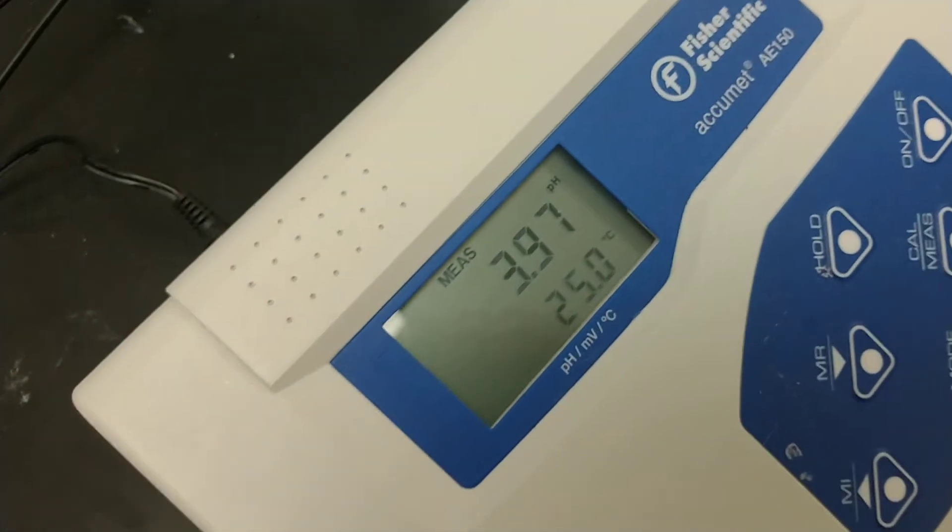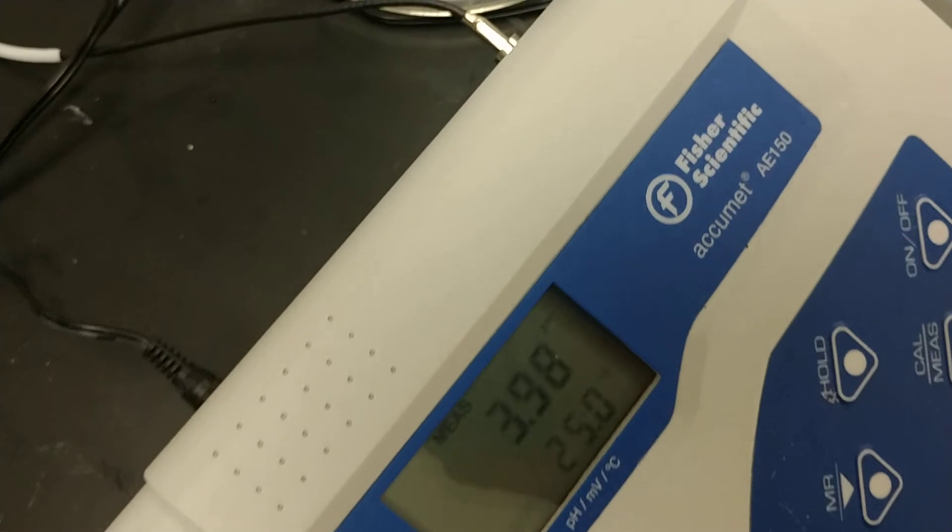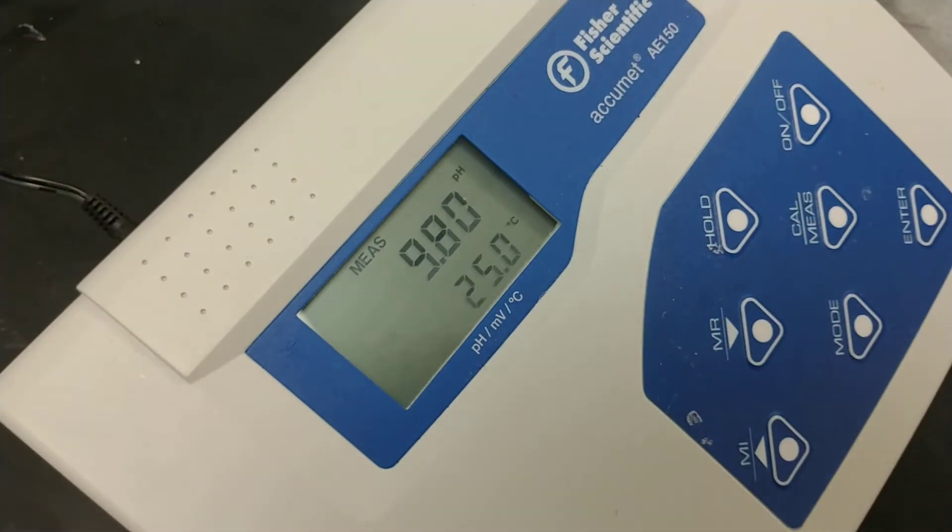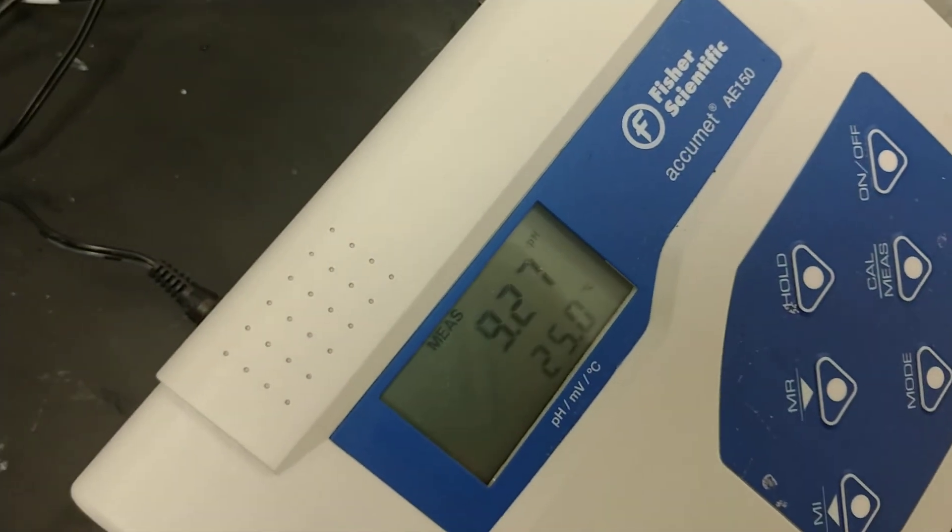Let's see what it thinks about the buffer. Well, it's pretty good at the buffer. Buffer of 4 reads 3.97. Buffer of 10, 9.8. It's just not finding a pH of 7.